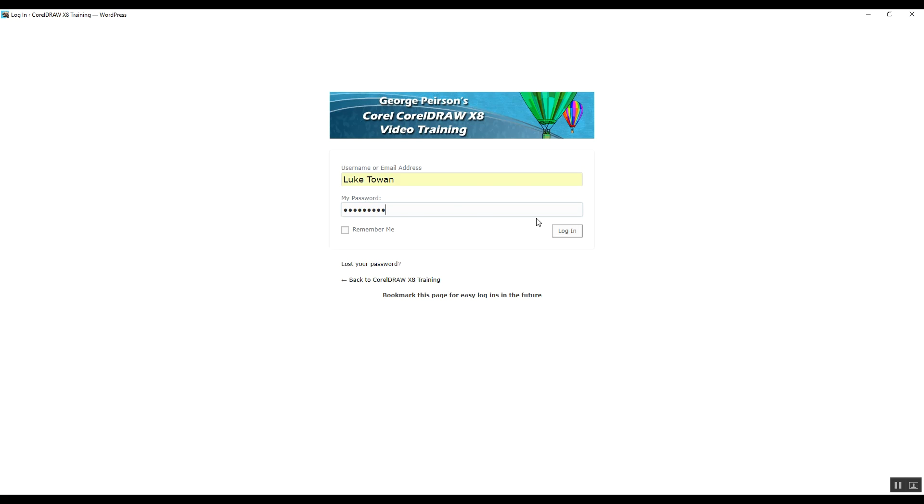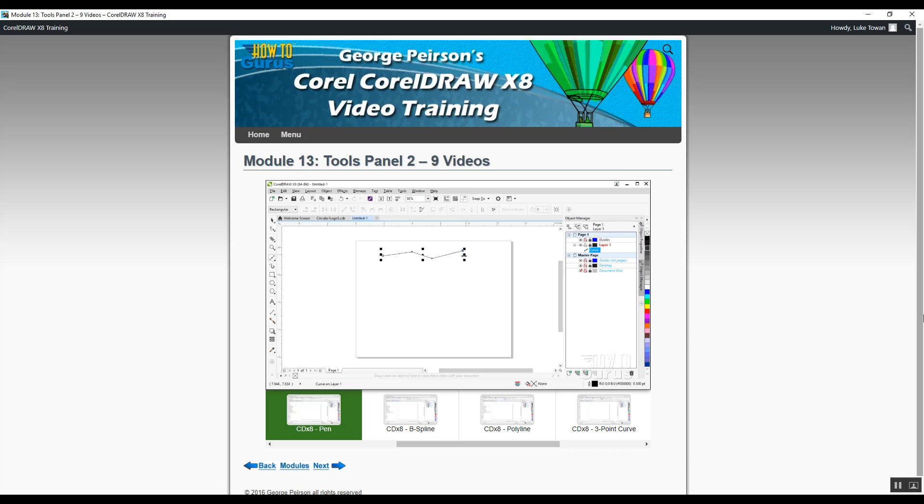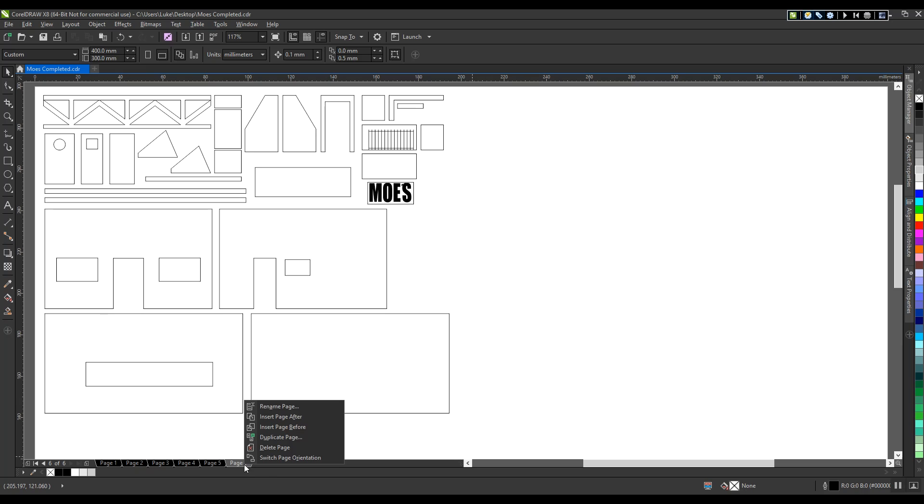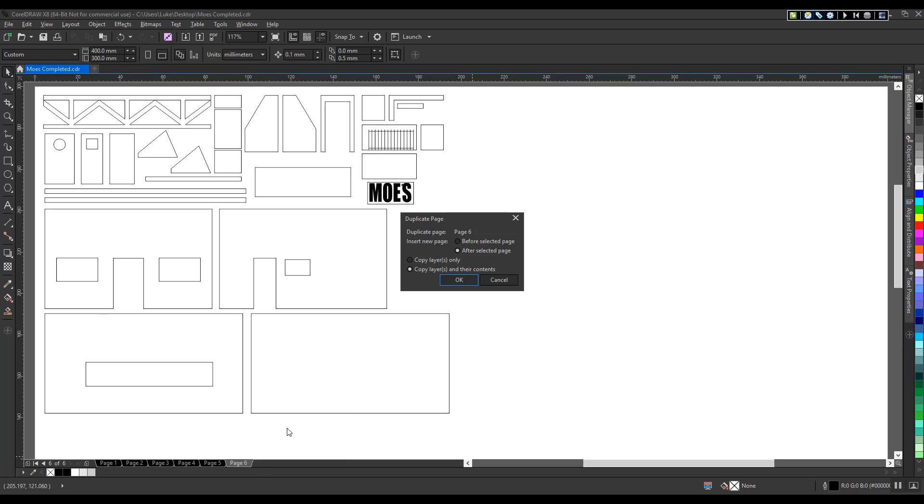I started learning the basics of CorelDRAW to create and design Moe's Tavern. You don't need to be an ace at using the program to get great results. A basic understanding of how to draw lines and merge shapes is sufficient to get started, and as you progress with the designing project, you'll pick up and learn new skills as you go.